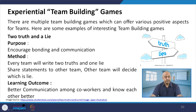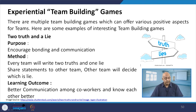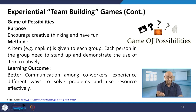There are multiple team building games offering various positive aspects for teams. One example is 'Two Truths and a Lie' — it encourages bonding and communication. Every team writes two truths and one lie, shares the statements with another team, and the other team decides which is the lie. The learning outcome is better communication among co-workers and knowing each other better.